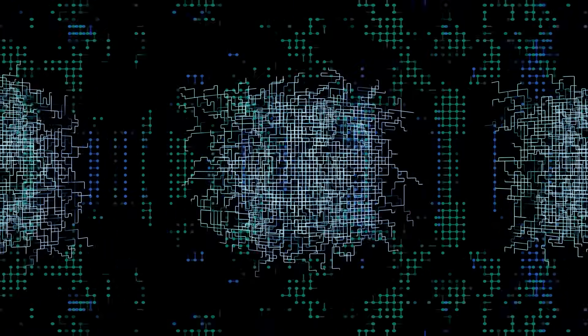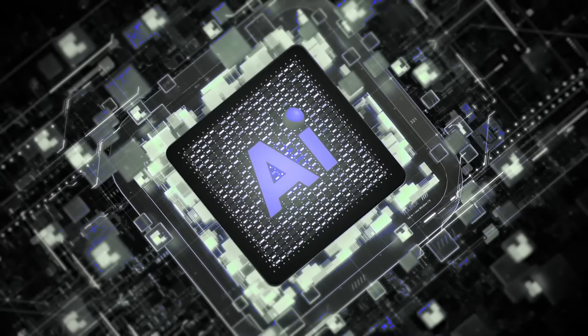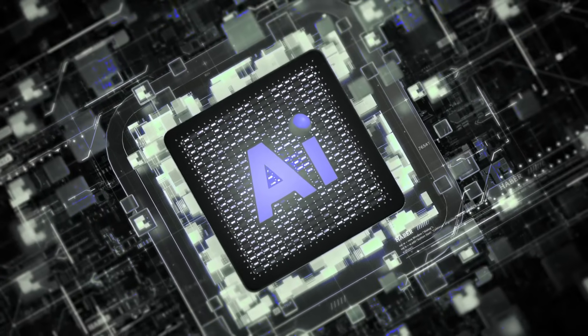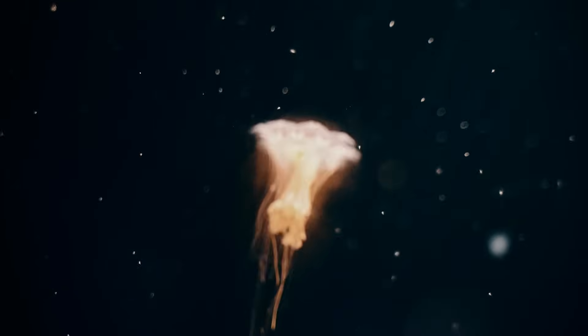At first, analysts believed it might be compression artifacts or background noise. But then a mathematician noticed something horrifying. The shapes mirrored structures found in deep-sea organisms on Earth, particularly cephalopod nervous systems and certain coral growth patterns.